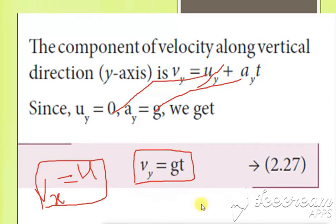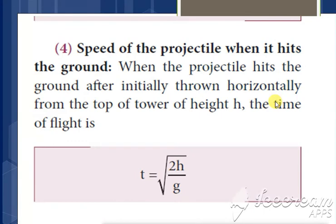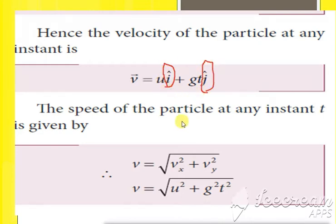So vx = u and vy = g·t. The total velocity vector is v = vx·i + vy·j = u·i + gt·j. The magnitude is |v| = √(vx² + vy²) = √(u² + g²t²).